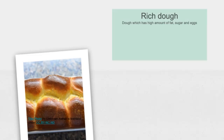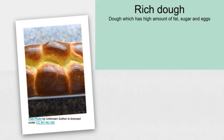Next is rich dough. The dough which has a high amount of fat, sugar and eggs in it is known as rich dough. Brioche or croissant would be the example of rich dough.